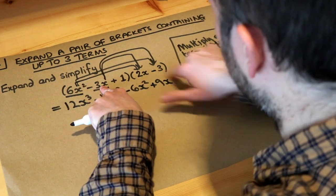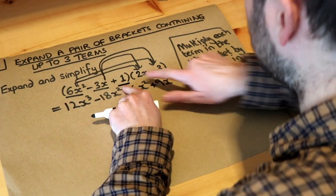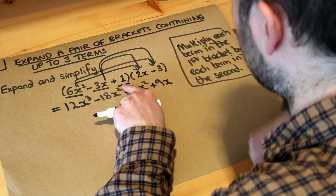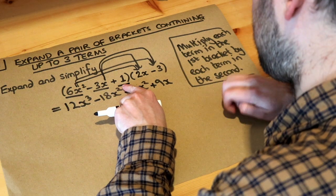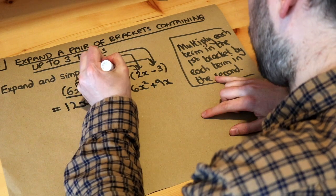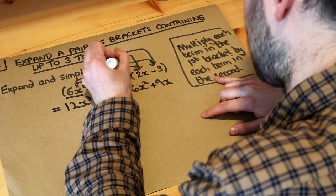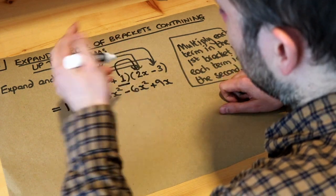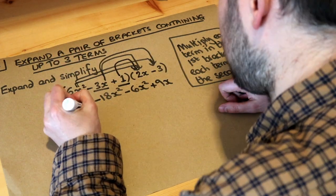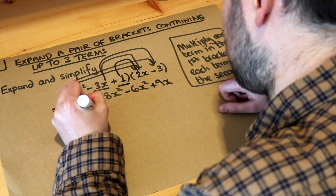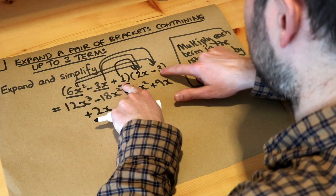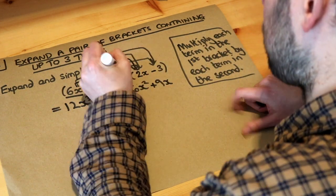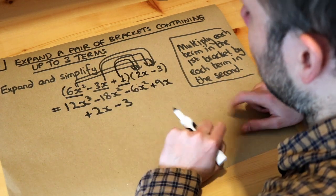Now we've done the first thing times each of these, the second thing times each of these, and now we do the third thing times each of these. We've got 1 times 2x and 1 times minus 3. 1 times 2x is just 2x, and 1 times minus 3 is just minus 3. We've now done every single possible combination.